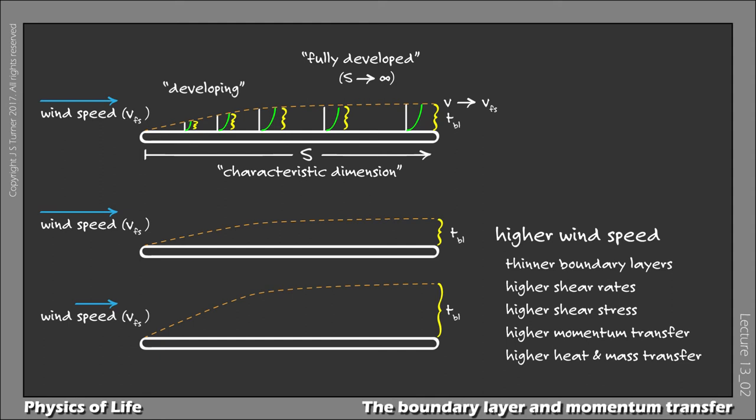Another important influence on the boundary layer is the characteristic dimension. Imagine that we now have a short plate, with S drastically reduced. This puts the boundary layer well within its developing phase, and as a result the boundary layer will be much thinner.